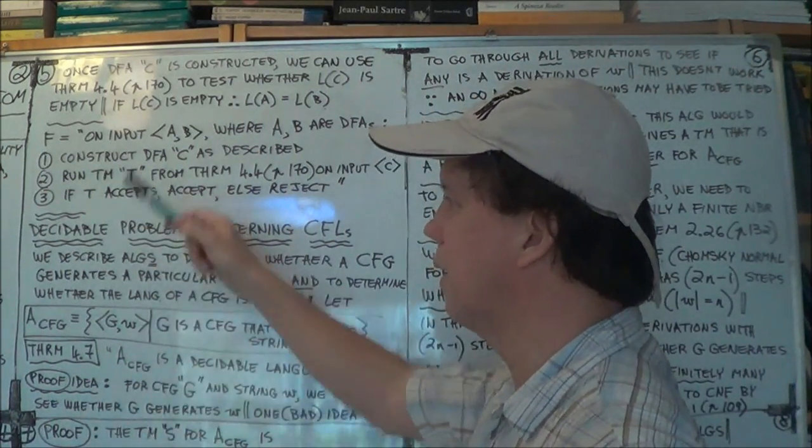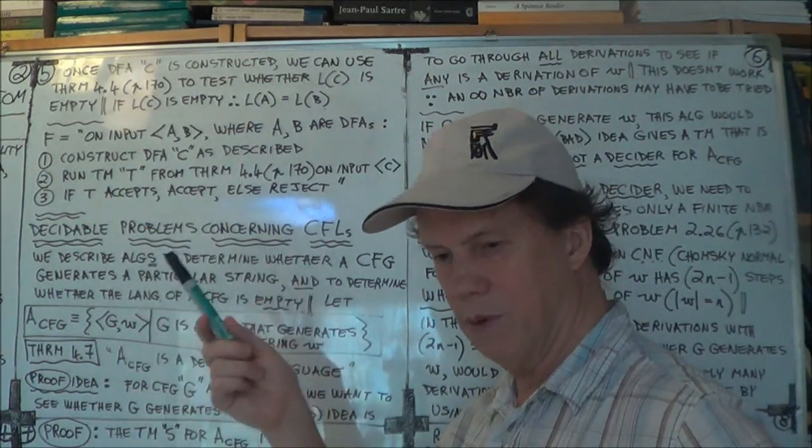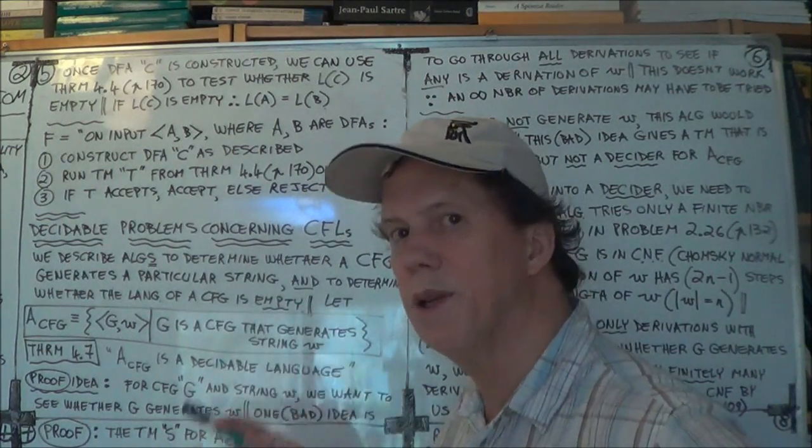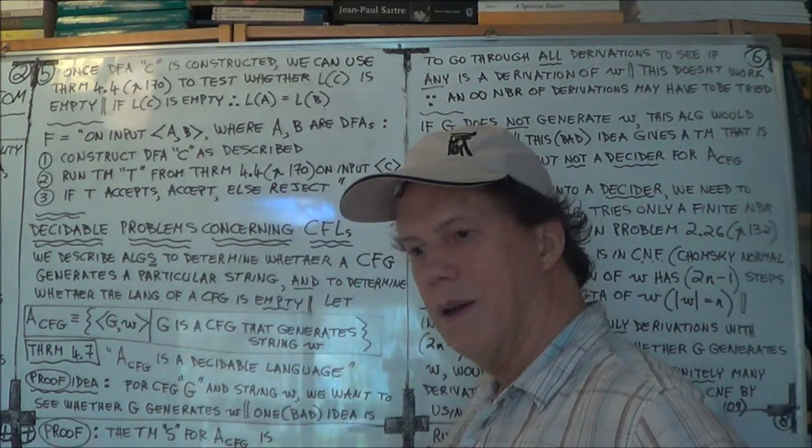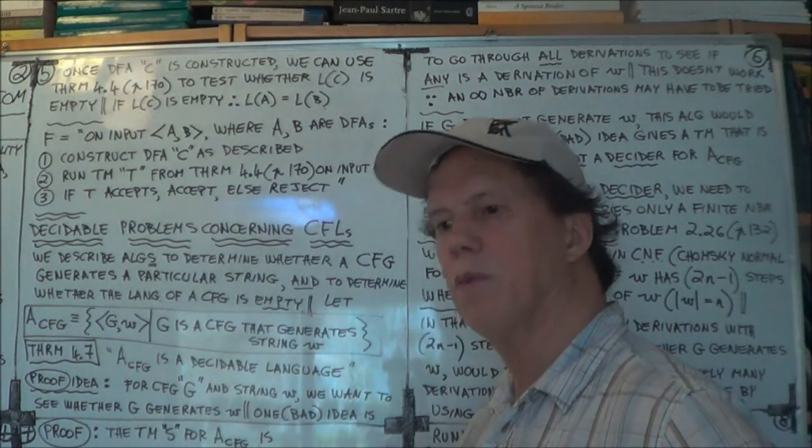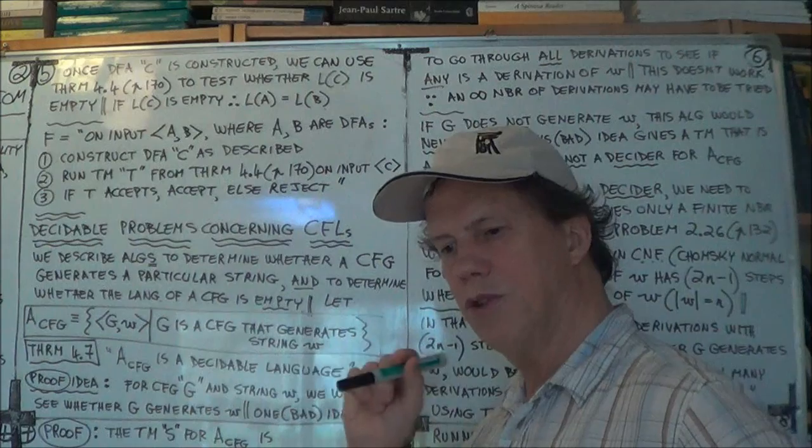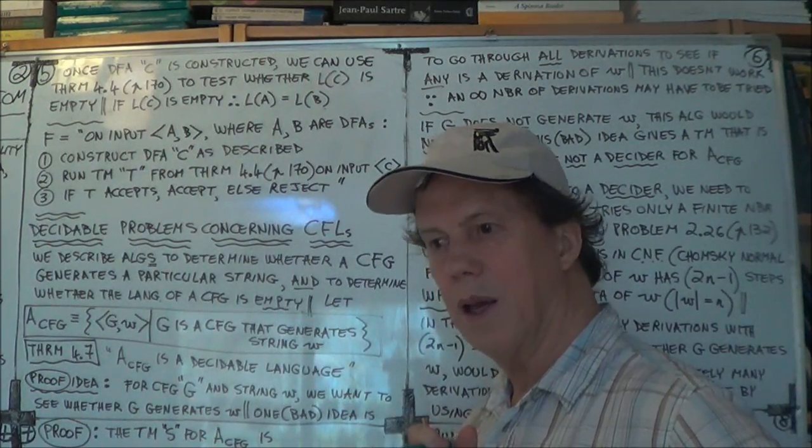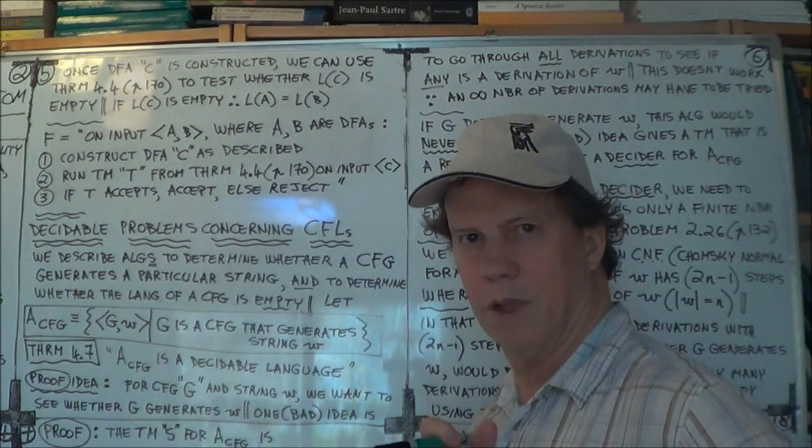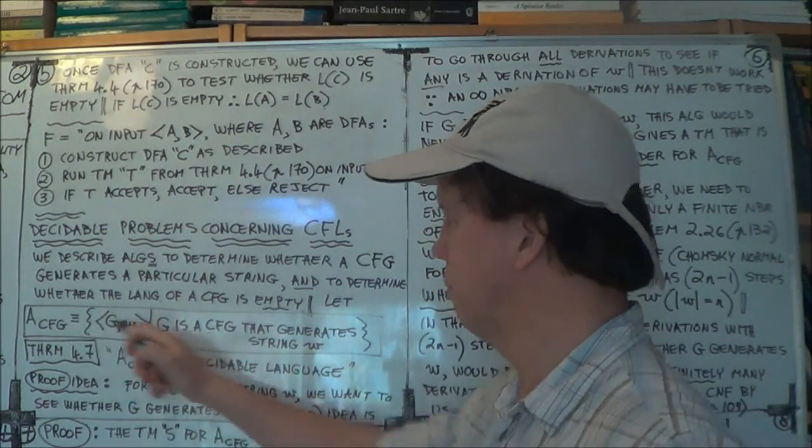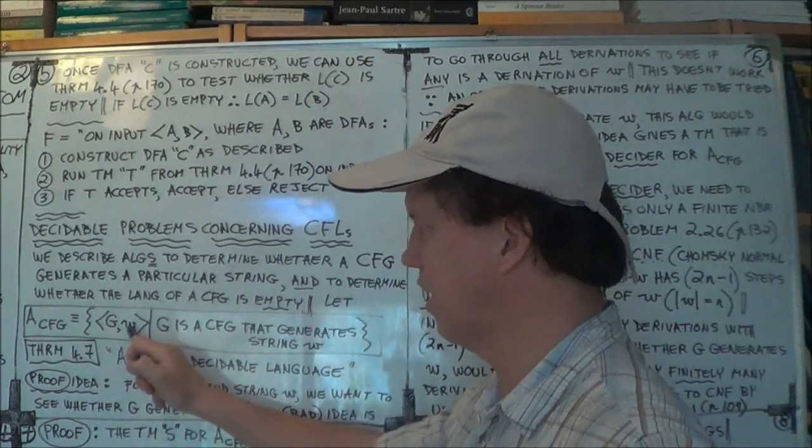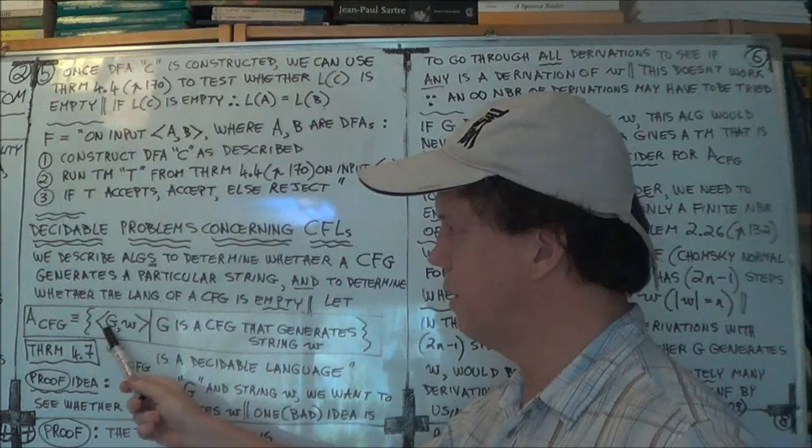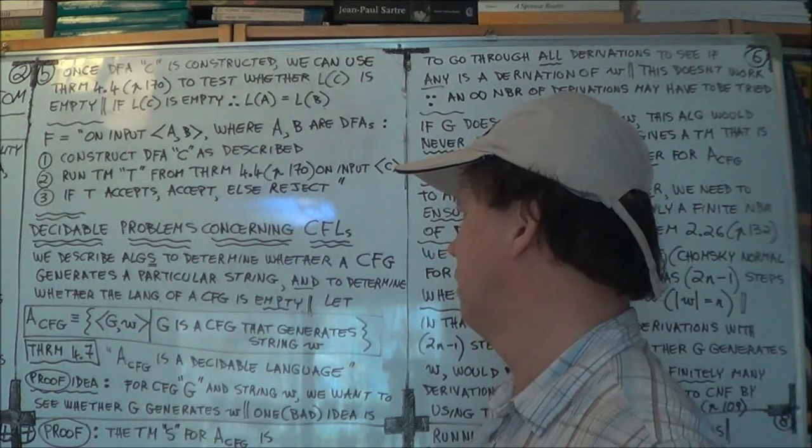Remember chapter one was about regular languages. They're a rather limited class of languages. And then in chapter two, we talked about context-free languages. And regular languages are a subset of context-free languages. So context-free languages are sort of a broader class of languages.